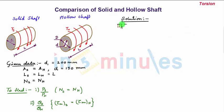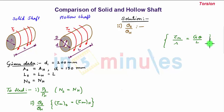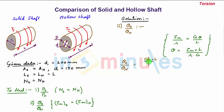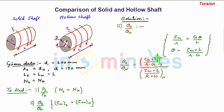Next, we find the ratio of the angle of twist of the solid shaft to the hollow shaft. From the torsional formula, τM/r = Gθ/L, so θ = τM·L / (r·G). Substituting this expression for θ, we write θS/θH accordingly. Since the length of both shafts is the same, L cancels.